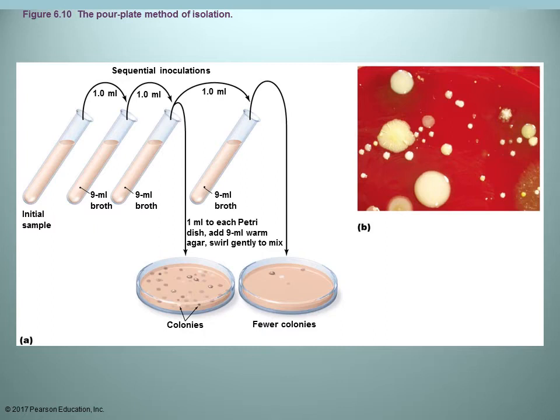In the pour plate result, you can see multiple different types of bacteria identified by color and size differences — referring back to colony characteristics. If you want to continue working with one type, pick a pure colony that has nothing else touching it and transfer it to new media for further growth and analysis.